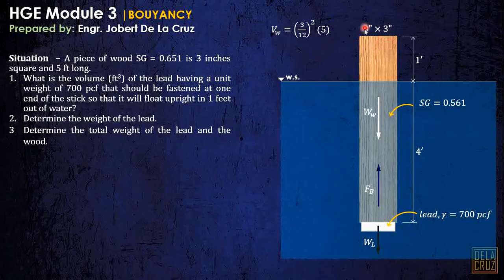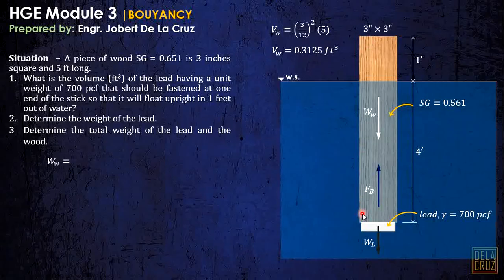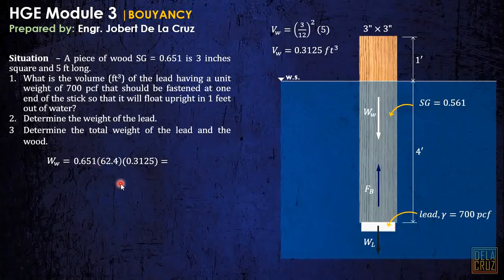I will calculate first the volume of the wood. Since the cross-section is square, that will be (3/12) squared times 5 — converting inches to feet. Then the weight of the wood is specific gravity times gamma of water: 0.651 times 62.4 pounds per cubic feet times the volume of the wood, which gives 12.69 pounds.